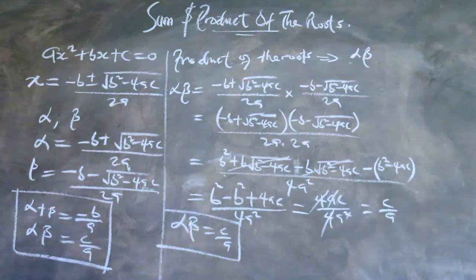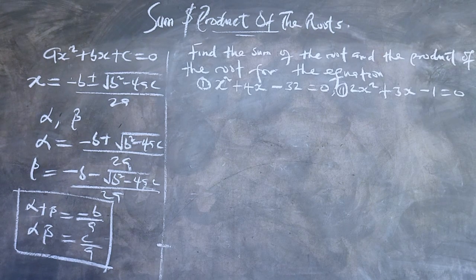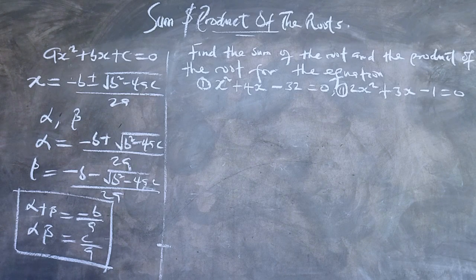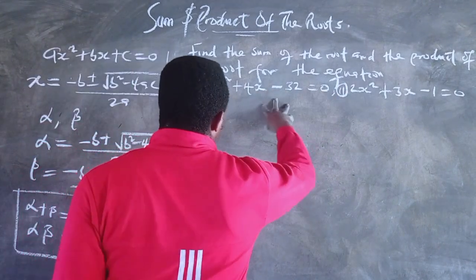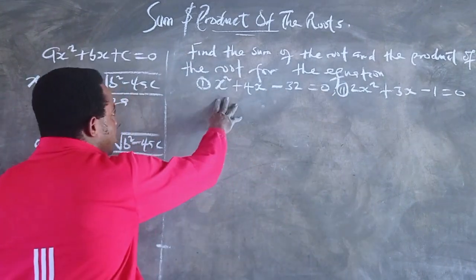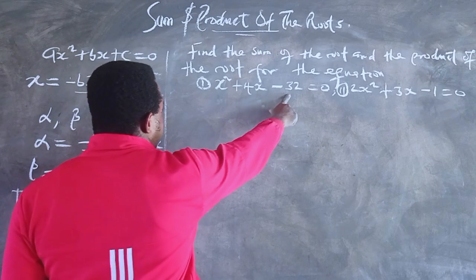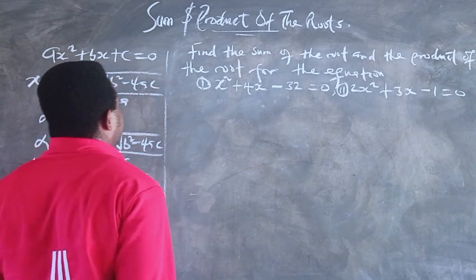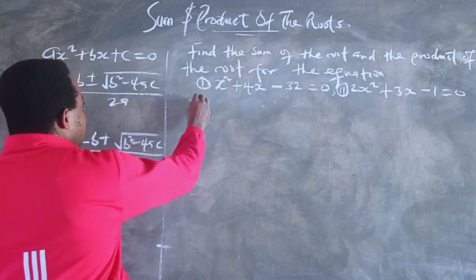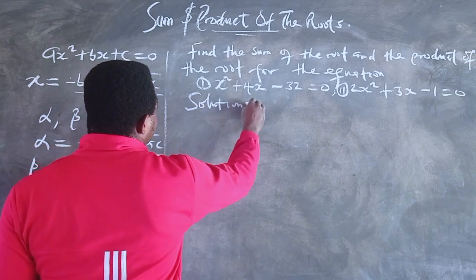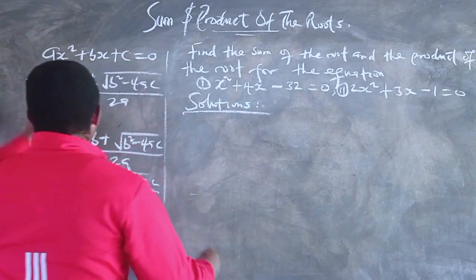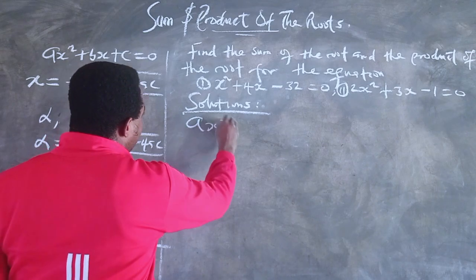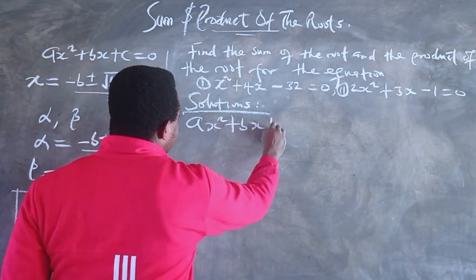Now let us apply these formulas to real problems. We need to find the sum of the roots and the product of the roots for the quadratic equation x² + 4x - 32 = 0. The general form is ax² + bx + c = 0, and it is important to remember this form so we can compare correctly.